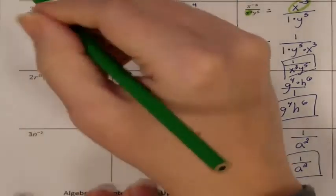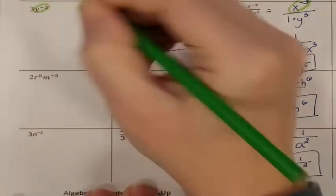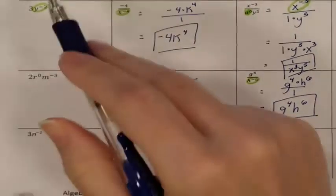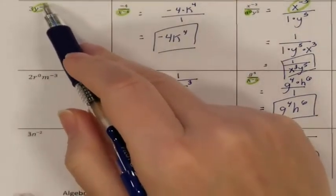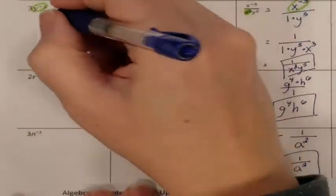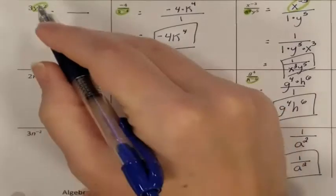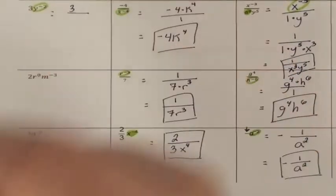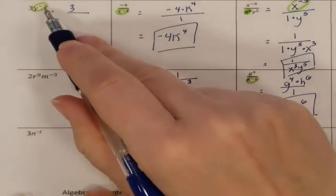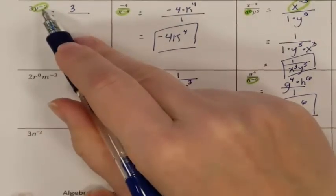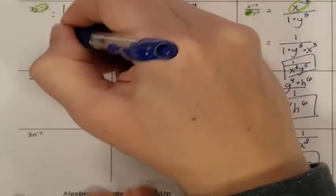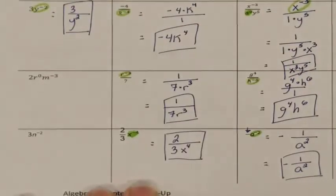Next problem. The Y is the only thing touching that negative exponent — the 3 is not touching it. If the 3 were to be affected by this exponent, it would have had to have been in parentheses. Here's my fraction bar: 3 is currently in the numerator and stays there because it has no negative exponent. The Y is currently in the numerator and needs to move — Y moves to the denominator and turns into a positive exponent. There is no other way to simplify, so you are done.